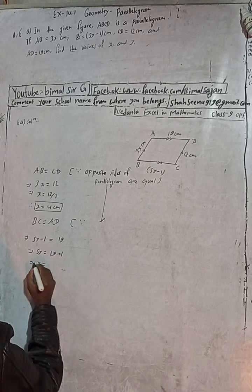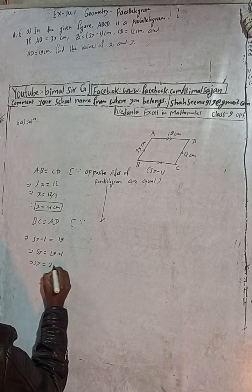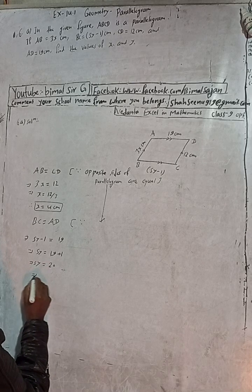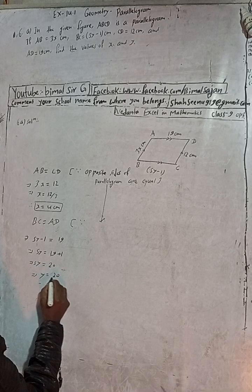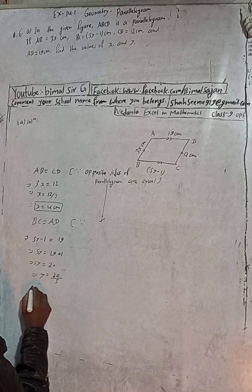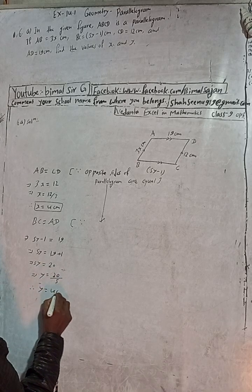This implies 5y is equal to 19 plus 1, which is 20. This implies y is equal to 20 divided by 5, therefore y is 4cm.